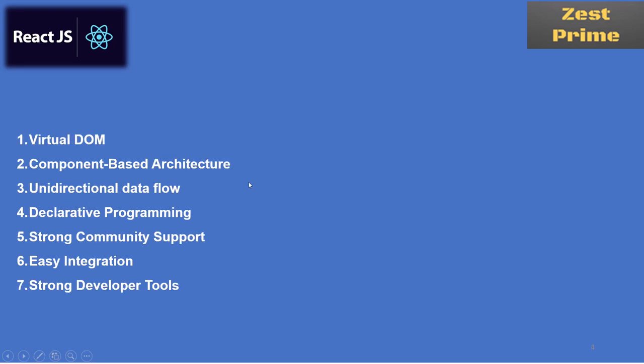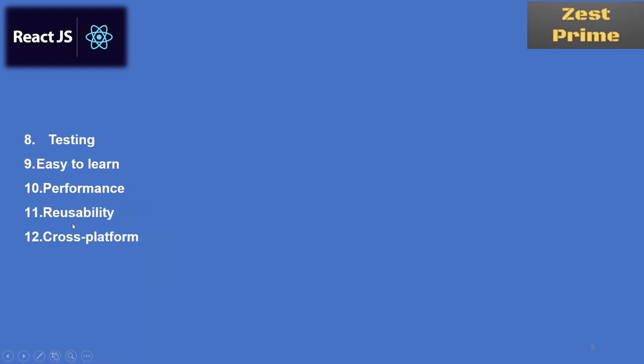The eleventh point is reusability. As discussed, React.js is component-based, so you can build a component once and reuse it many times in your application — a major advantage. The twelfth and final point is cross-platform support. React.js can be used for web development, and React Native can be used for mobile application development, making it useful for building cross-platform applications.